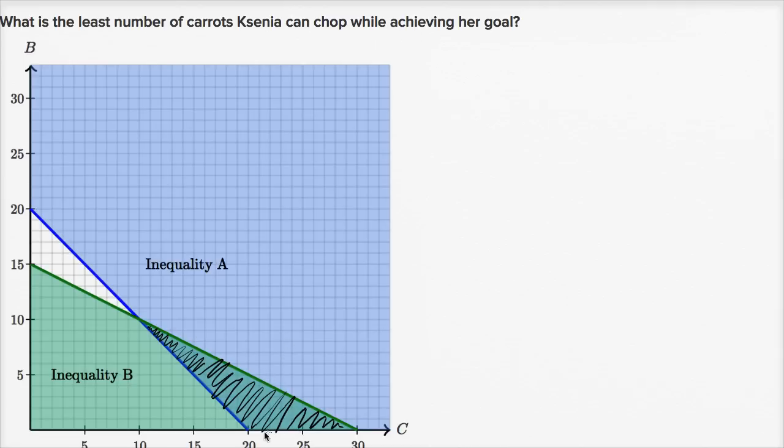So if we see here the least number of carrots, you might be tempted to say, okay, 20 carrots, that is in the solution set. That would be 20 carrots and zero broccoli heads. But you can actually find a combination that has even fewer carrots. You could go all the way to this point, because remember, the points on the lines are also included in the solution sets because they are solid lines, not dashed lines.